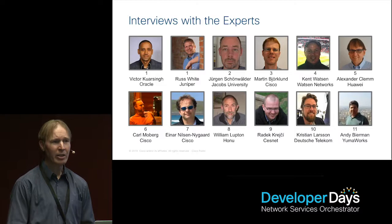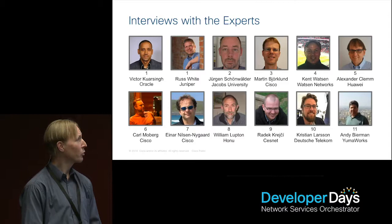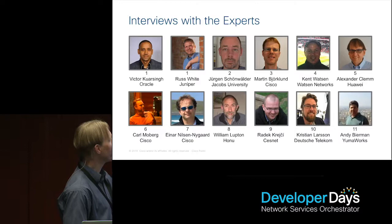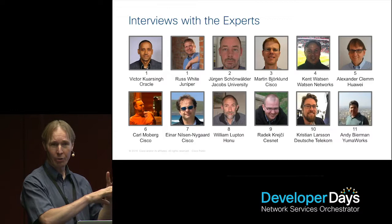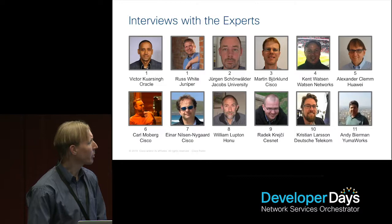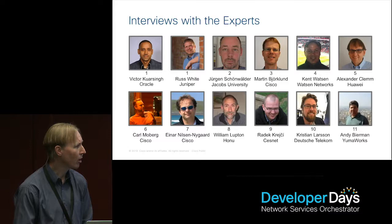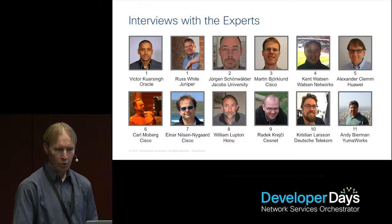One way of doing that is that for each chapter, we wanted to have an interview with one of the industry experts. Originally, we wanted 12 chapters, so we interviewed 12 people. In the end, we canceled the last chapter — now we have 11 chapters and two interviews in the first chapter instead. We tried hard to reach out to other organizations: Oracle, Juniper, Jacobs University, Watson Networks, Huawei, HONU, Cessnet, Deutsche Telekom, and UMWorks represented apart from Cisco.